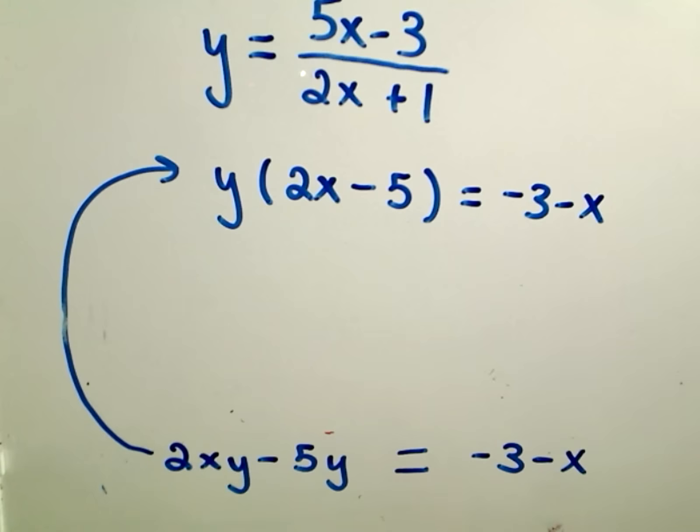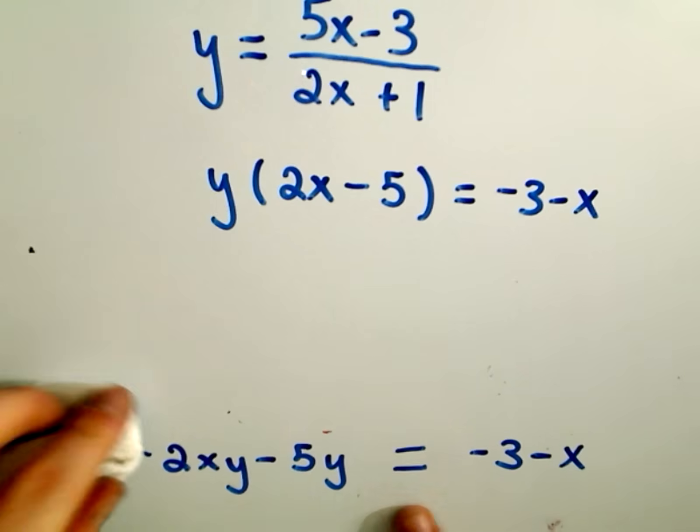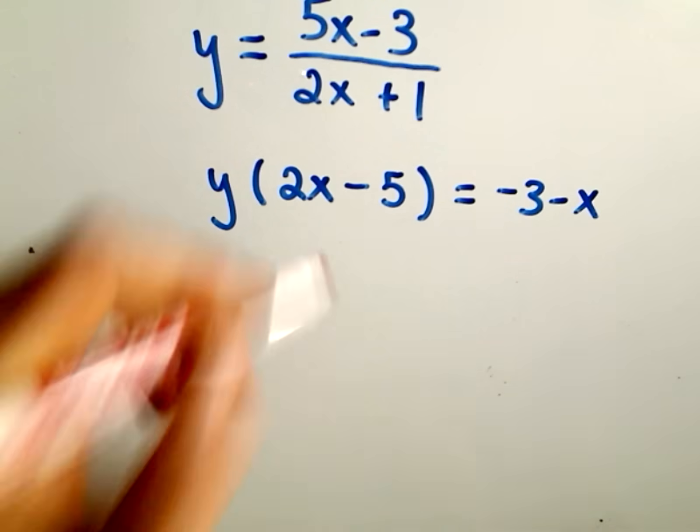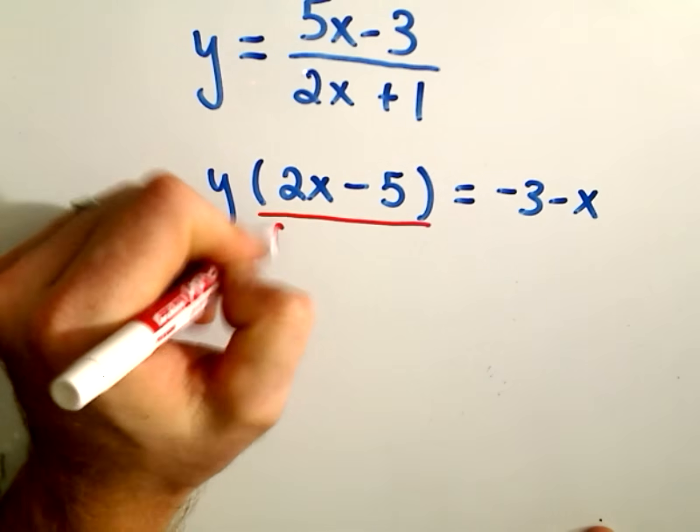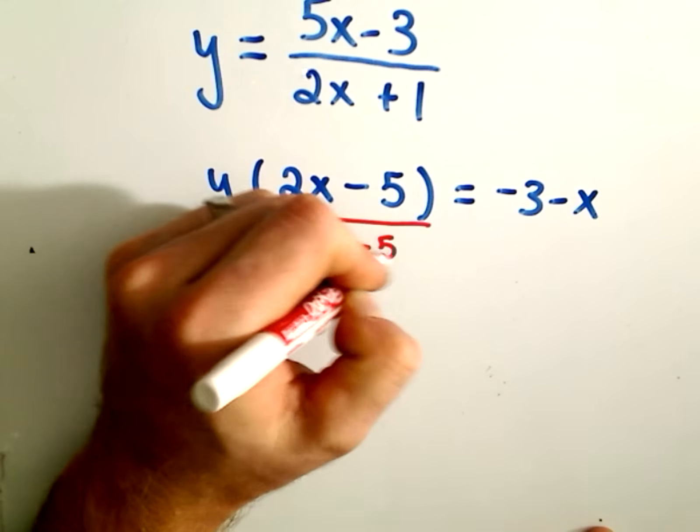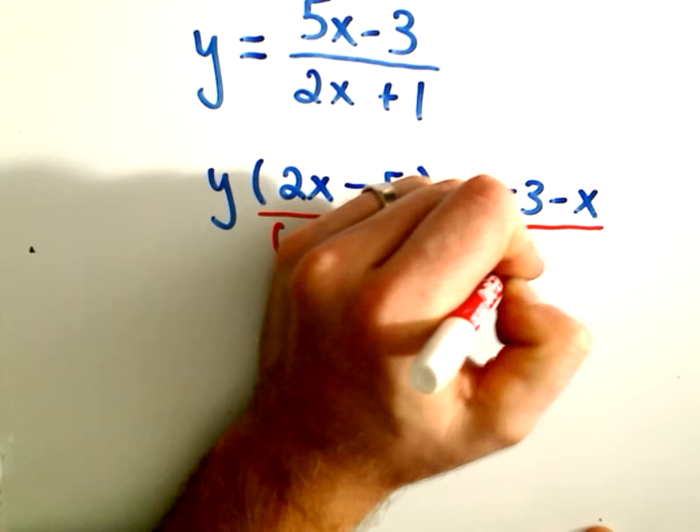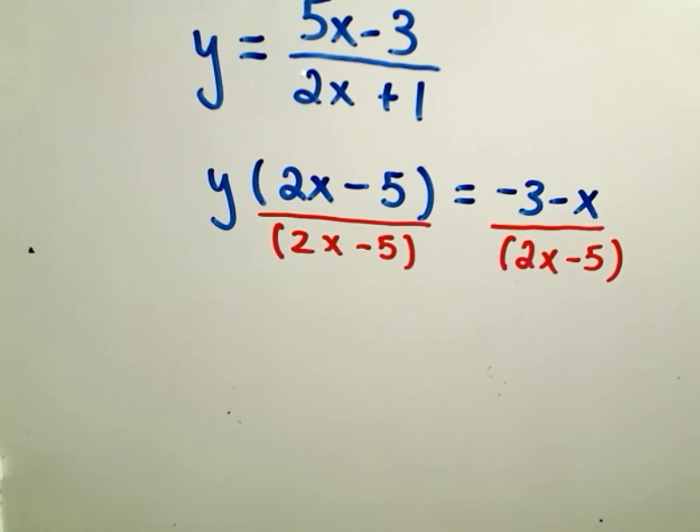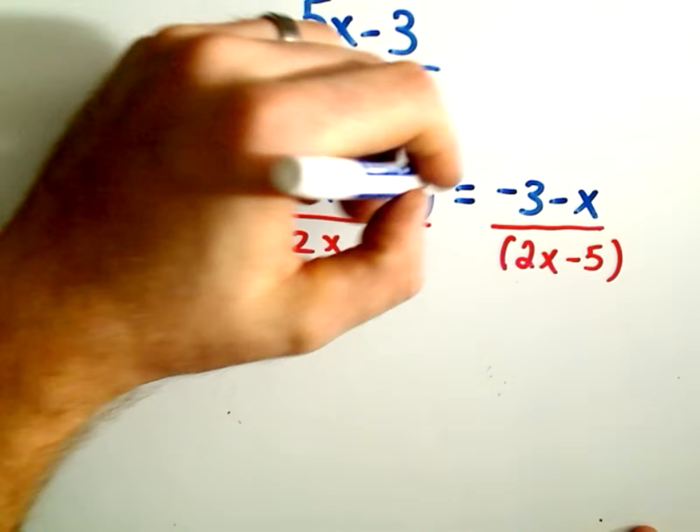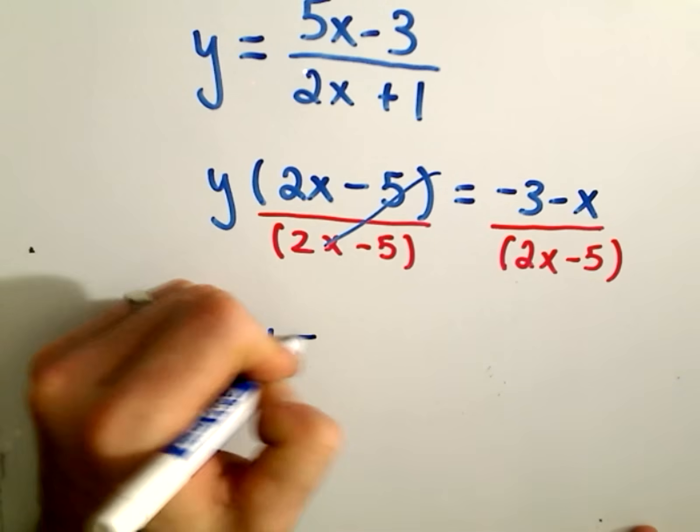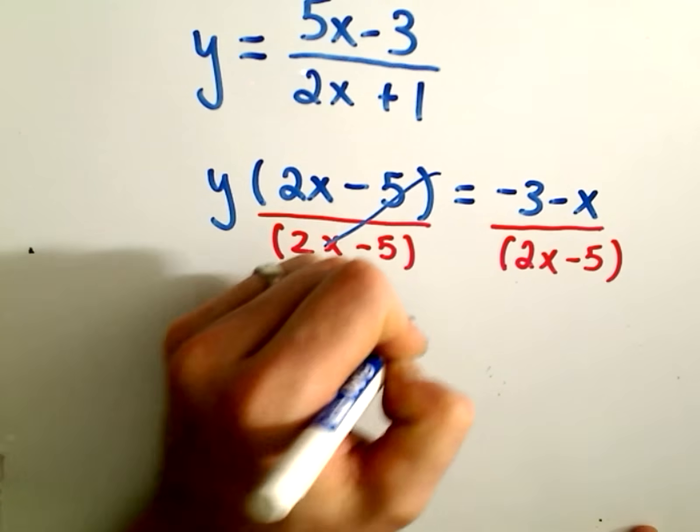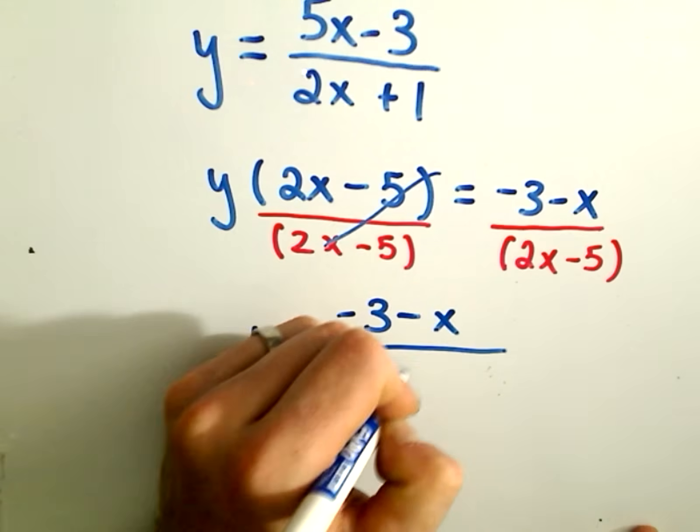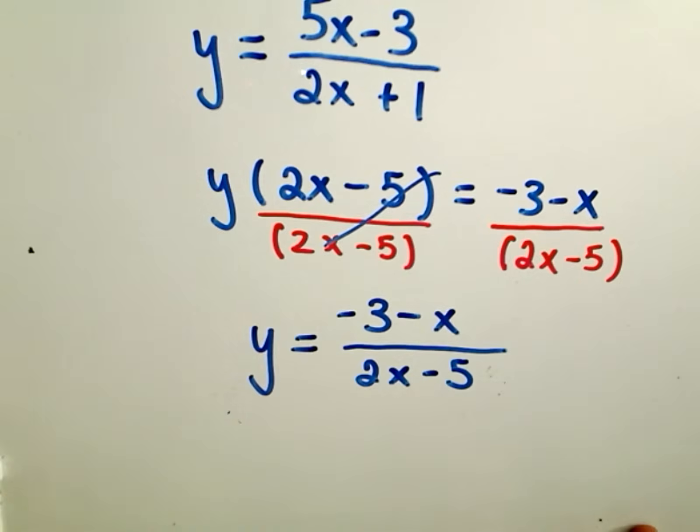Well, to get the y all by itself, all I have to do now is simply divide both sides by the 2x minus 5. So I have to divide the right side as well by 2x minus 5, and that'll be my final answer. On the left, it'll cancel out, and I'll get simply that y equals negative 3 minus x over 2x minus 5.